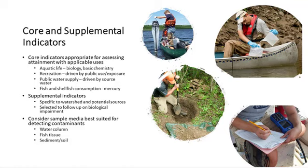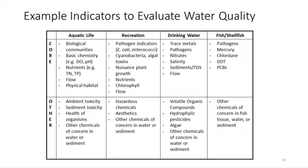Another consideration in the selection of indicators to monitor is the media most appropriate to evaluate those contaminants — the media being the water, tissue, or sediment. Some pollutants accumulate differently in different media. For example, it's more effective to sample fish tissue than the surface water for mercury, because mercury is typically present in low concentrations in the surface water but accumulates in the tissue of the fish that people are consuming. Examples of core and supplemental indicators are taken from the elements of the state monitoring and reporting program guidance document.